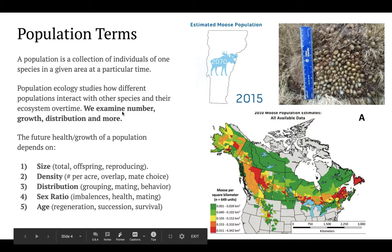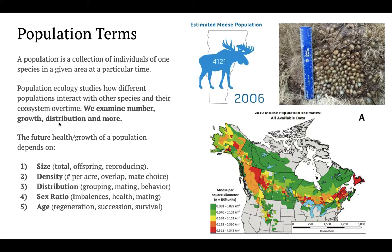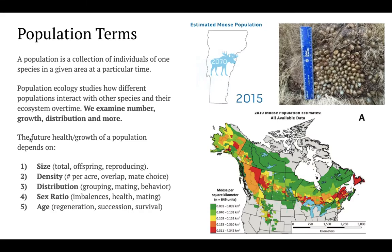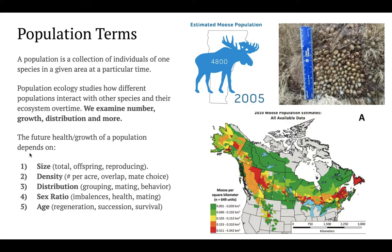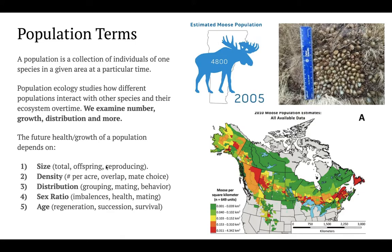We can look at numbers of moose, the growth of moose, the distribution of moose, and more to understand how a population changes over time. The future health and growth of a population depends on five current parameters. The first is size: the total number of moose, the number of offspring, and the number of moose that are reproducing — this gives us a framework to think about future growth.